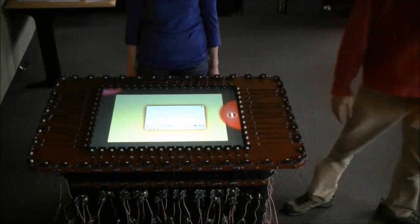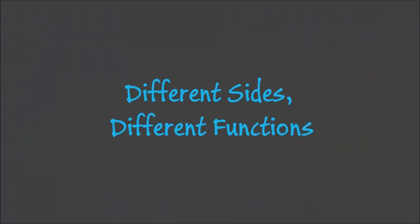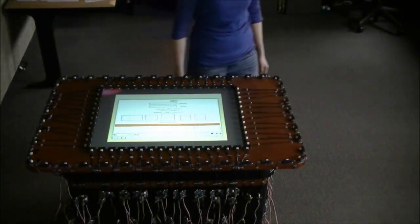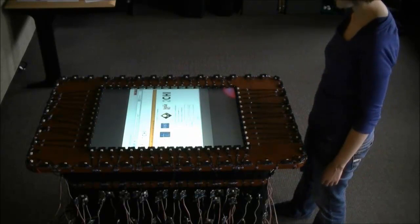ProxySketch also assigns different functionality to different sides of the tabletop. Here the user can transition between low and high fidelity prototypes by simply walking to another side of the table, giving them a fresh point of view.